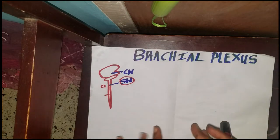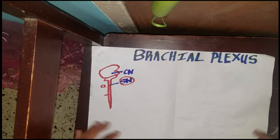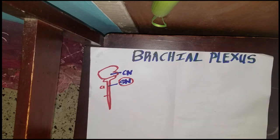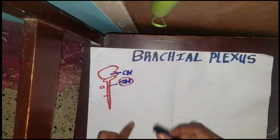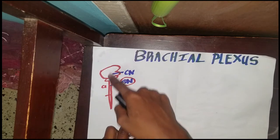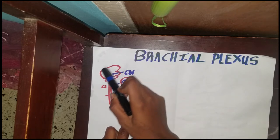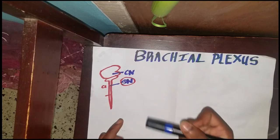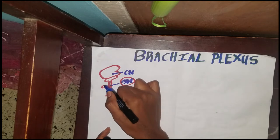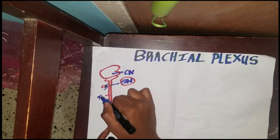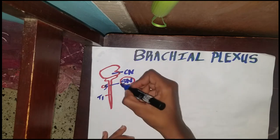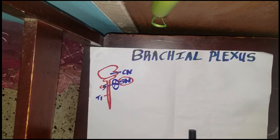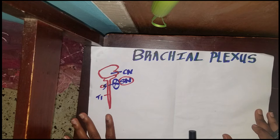Hey guys, welcome back. Today I'll be telling you a very simple way to remember the brachial plexus. The brachial plexus is basically a plexus of nerves, or a group of nerves. Nerves that come out of the brain we call cranial nerves, and nerves that come from the spinal cord we call spinal nerves. The nerves that come from C5 to T1 make a plexus called the brachial plexus.